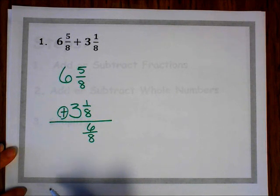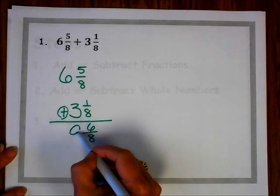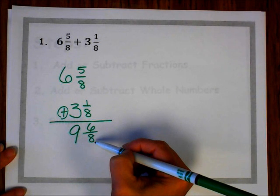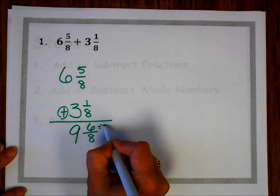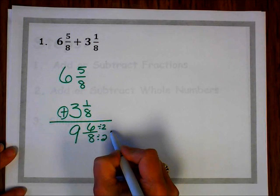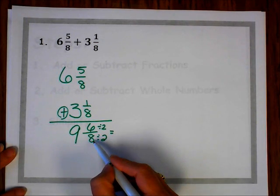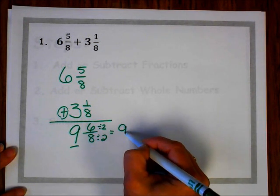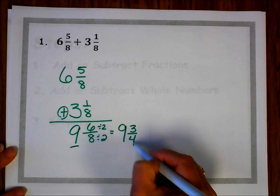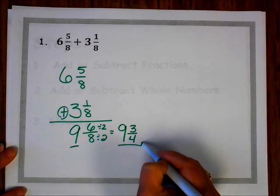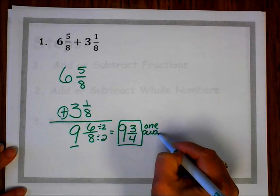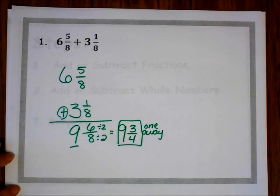I'm going to add my whole numbers: 6 plus 3 is 9. My last step is to see if I can simplify. I know that both 6 and 8 are even, so I can simplify by twos. So 6 eighths simplifies to 3 fourths, but don't forget to include your whole number. So 9 and 6 eighths simplifies to 9 and 3 fourths. My numerator and denominator are 1 away, so I know my answer is in simplest form.